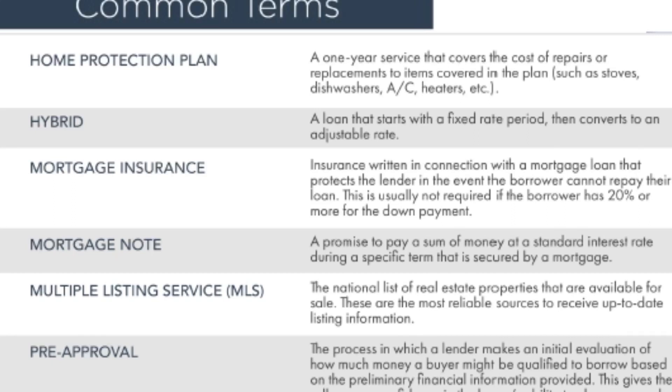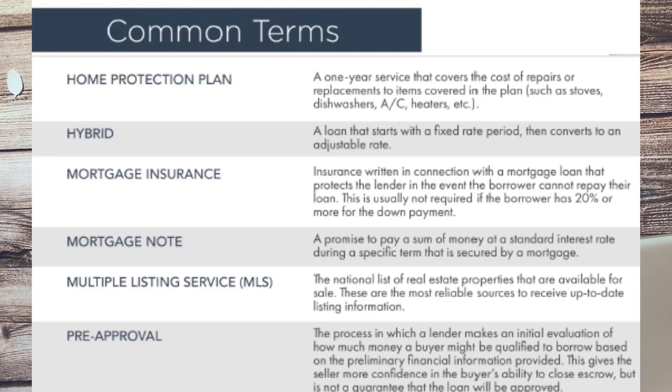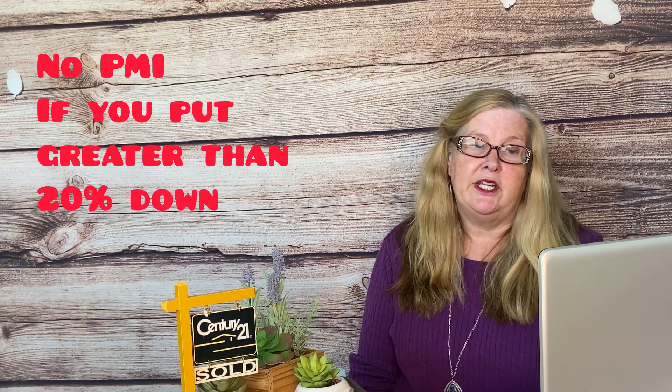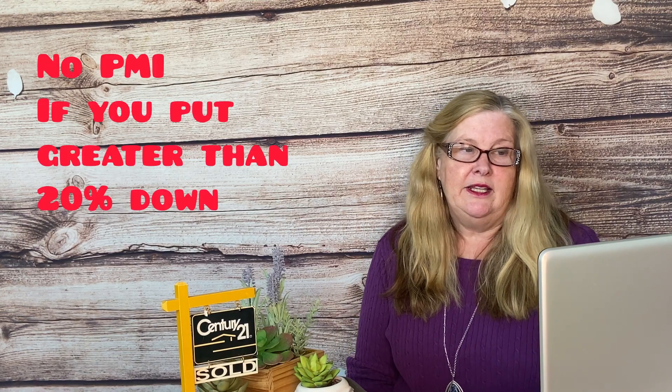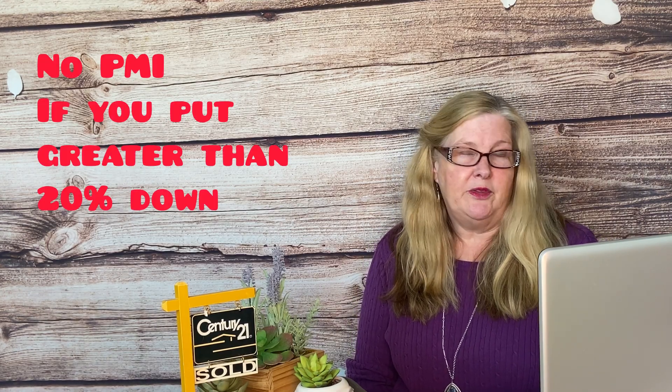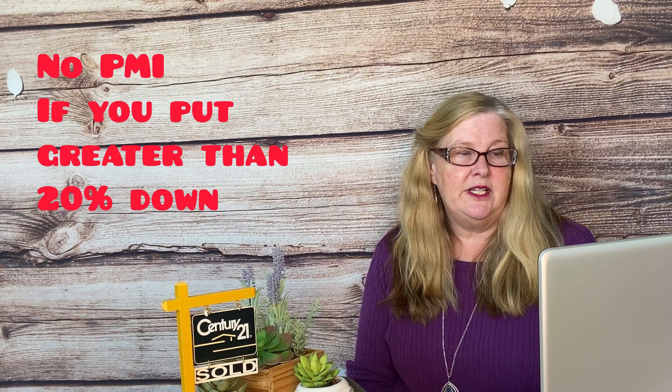Mortgage Insurance, also known as PMI: Insurance written in connection with a mortgage loan that protects the lender in the event the borrower cannot repay their loan. This is usually not required if the borrower puts more than 20% down for the down payment on the house they want to purchase.